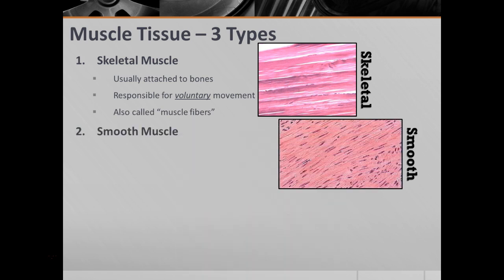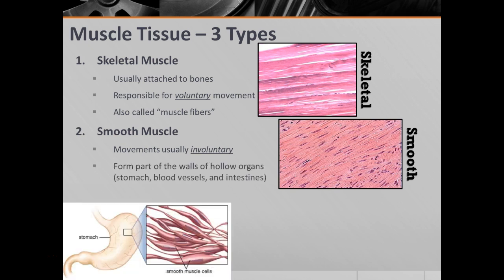The second kind is smooth muscle. You can see the very different appearance of smooth muscle versus skeletal muscle. This is going to control movements that are usually involuntary. So it's going to form parts of the walls of hollow organs, like your stomach, your blood vessels, your intestines. When you have peristalsis — when muscular contractions move things through your intestines and move out your food and waste — that is smooth muscle contractions. So you're going to find those lining the stomach and other organs like that.